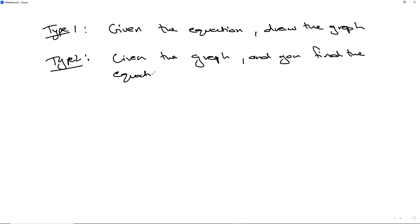Sometimes you get two kinds of questions in straight lines. The first type is when you are given the straight line equation and you have to draw the graph. The second type is when you're given the graph and you have to find the equation.